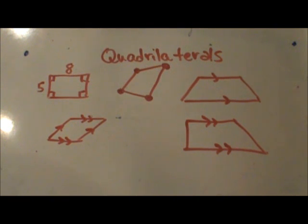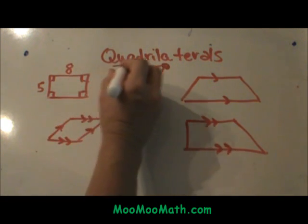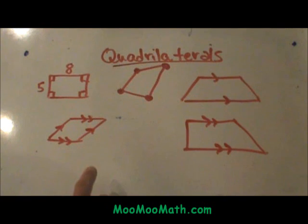Welcome to Moo Moo Math. Today we are going to look at quadrilaterals and the different types of quadrilaterals. A quadrilateral is just a four-sided polygon.